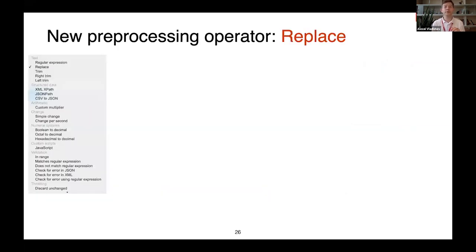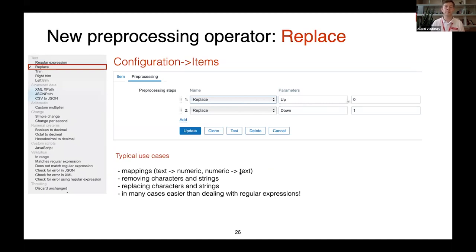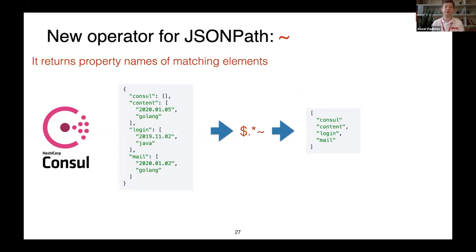A few minor improvements: we now have a Replace pre-processing operation. Previously, replacing a string required a regular expression or JavaScript, but for simple cases we now have a dedicated Replace string operator. For example, you can map 'up' to '0' and 'down' to '1' when you receive text values but want numeric representation for graphs or trigger expressions. It can also be used for removing characters from incoming data.